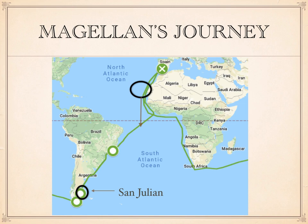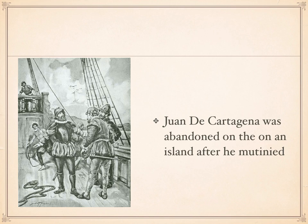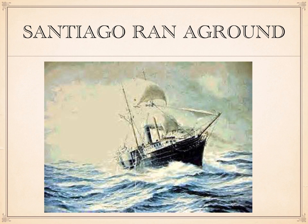Magellan left two of the mutineers on an uninhabited island off the coast of Argentina to die. One of the two men was Juan de Cartagena, the son of one of the most powerful men in Spain and captain of the San Antonio. Magellan decided not to kill him outright, but did not let him live either. Magellan then sent the Santiago 60 miles down the coast to look for an opening around the tip of South America, but the ship ran aground. Two men trekked the whole way back overland in the dead of winter and found the base camp at San Julian. A rescue party retrieved all the men from the shipwreck and nobody had actually died.